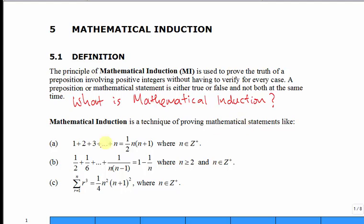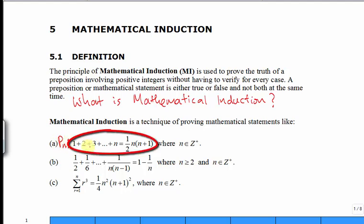For example, let's say we have this statement: 1 plus 2 plus 3, all the way until plus n, is equal to half n multiplied by n plus 1. We are supposed to prove this statement. In mathematical induction, we usually let the statement we are going to prove be Pn. So Pn is this expression and we are supposed to prove that Pn is true.